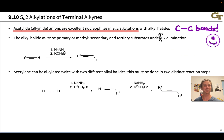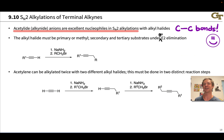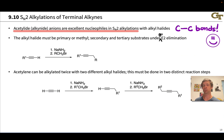Organic chemists love making carbon-carbon bonds because this is what allows us to make organic molecules bigger and more complex, with more carbon-carbon bonds. This is the first of many reactions we'll see in organic chemistry where we're making carbon-carbon bonds. The idea here is simply SN2 substitution of an alkyl halide using an acetylide nucleophile.